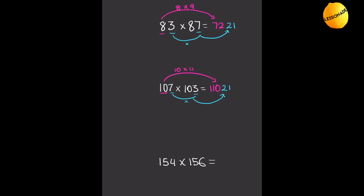Let me explain that three-digit question once more. Instead of taking just the tens value, we took the hundreds and tens value together, which is 10. We multiplied that by its next highest number, which is 11 — so 10 times 11 gave us 110. Then we did 7 times 3, which gave us 21. So the answer was 11021.